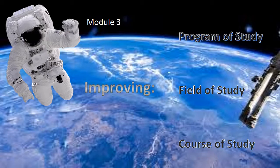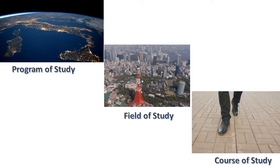Imagine a continuum from the top left corner of this slide to the bottom right corner. When we look at programs of study, fields of study, and then a course of study, we're simply looking at the curriculum from three different perspectives — or using three different lenses to examine it. The broadest view is the program of study, where you're looking at all learning activities at a specific level: elementary, middle, or secondary. It's similar to the view of Earth from the International Space Station — you can make out the country of Italy from a nighttime view.